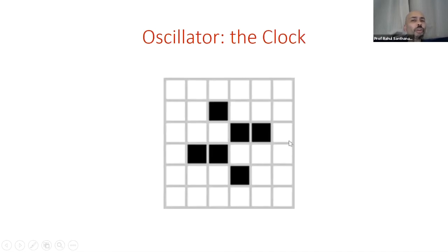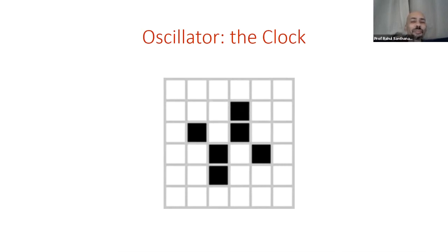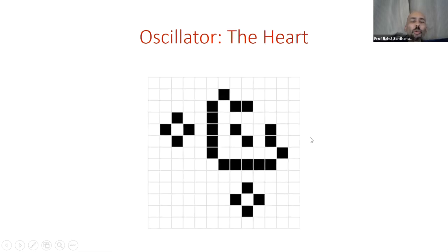There are also oscillators — sequences of configurations that repeat. Here's one called the 'clock,' which intuitively feels like the swinging of a pendulum. It's a pattern with period two, cycling between two configurations over and over. There's also a more poetic oscillating configuration called the 'heart,' with period five — it evolves and returns to its initial configuration, always staying in the same place.